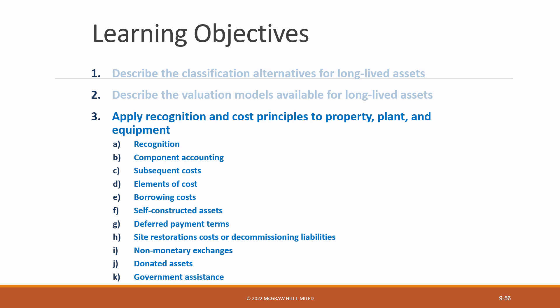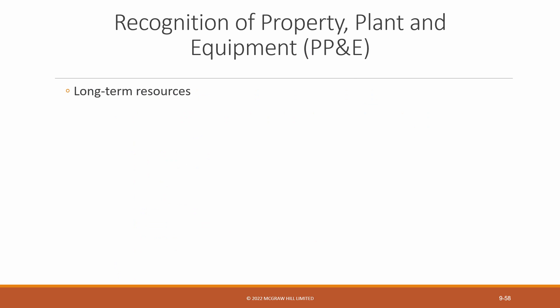As you can see, we have a lot to cover in this one learning objective, so let's get started with when assets should be recognized, which is all about capitalization. Property, plant and equipment — PP&E for short — includes long-term resources such as office, factory, and warehouse buildings, investment properties, equipment such as machinery, furniture, tools, and mineral resource properties. PP&E is also referred to as a tangible capital asset, a capital asset, plant assets, or fixed assets.